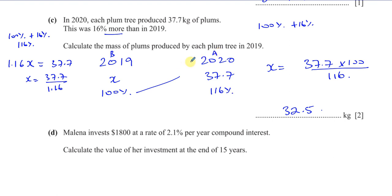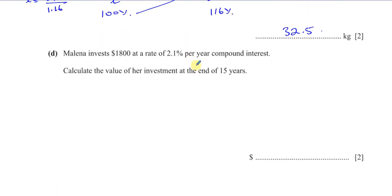Now part D: Molina invests $1,800 at a rate of 2.1% per year compound interest. Calculate the value of the investment at the end of 15 years. This is compound interest, not simple interest — so don't make the mistake of using PRT over 100 and adding that to 1,800, which would be for simple interest.